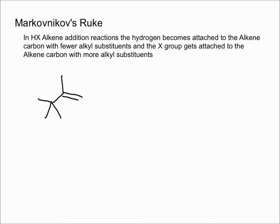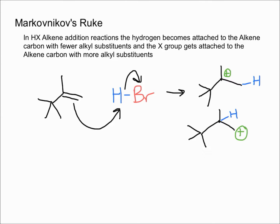Let's take this molecule as an example — we have the alkene right here. We're going to do an HBr addition. The first step is for the alkene to attack the hydrogen, and then those electrons get kicked off to the bromine.